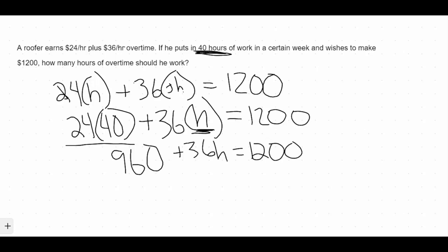So if we're solving this equation, then we're solving it for H, so we need to get rid of the 960. So I'm going to subtract 960 from both sides. And when we do that, we are left with 36H is equal to, well, let's see, 1200 minus 960 leaves us with 240.